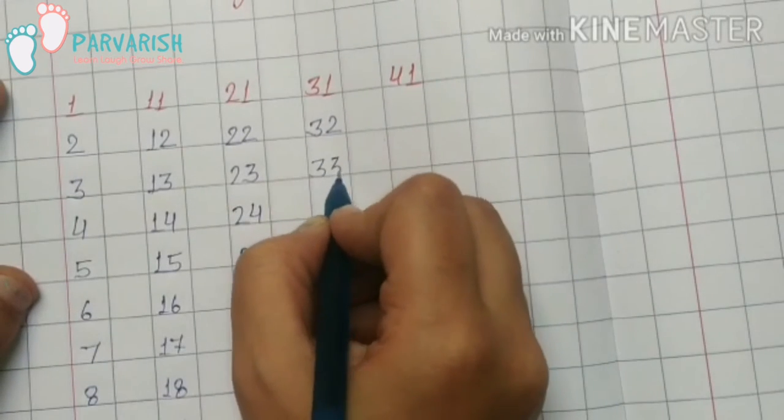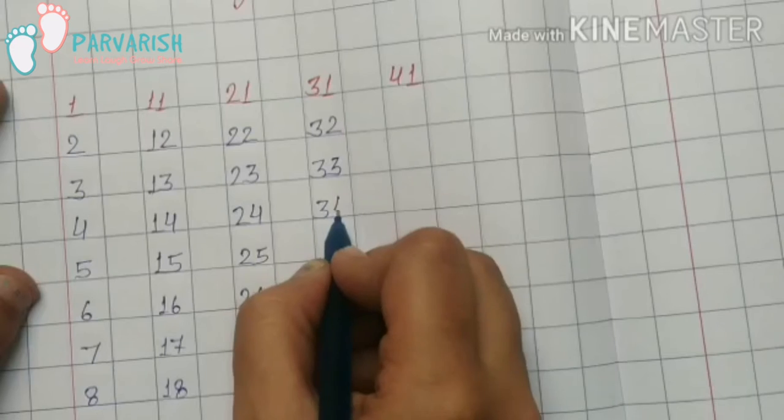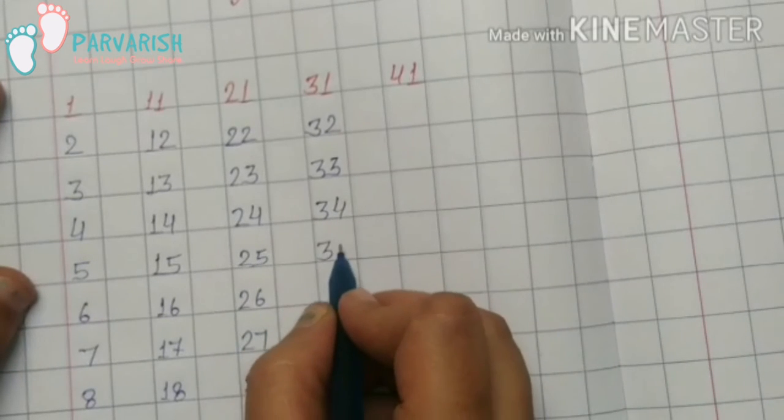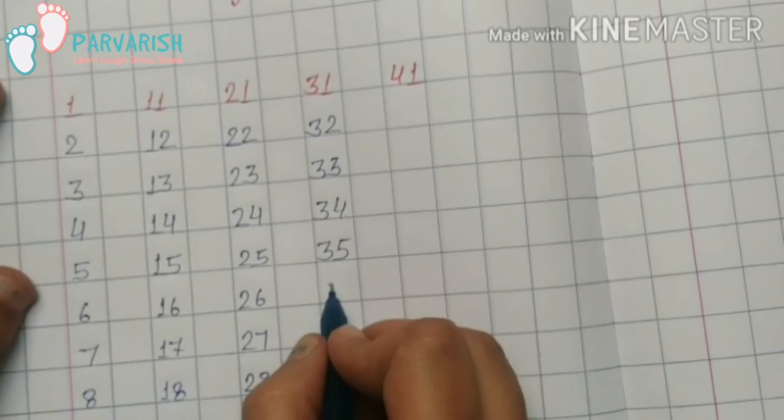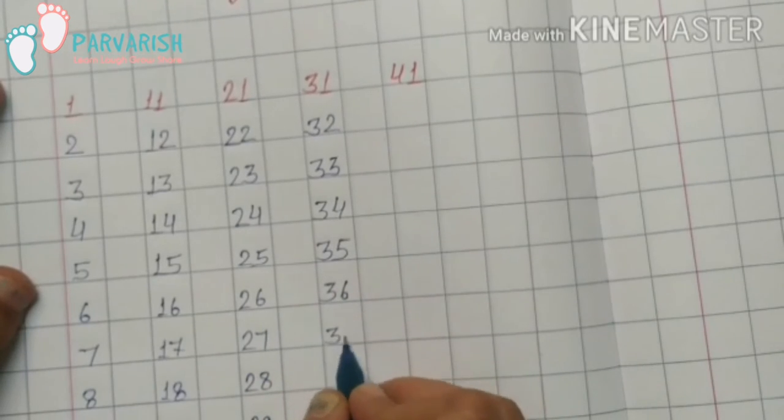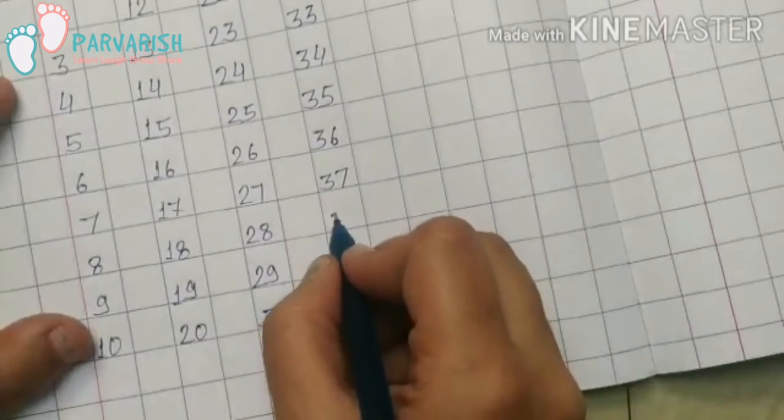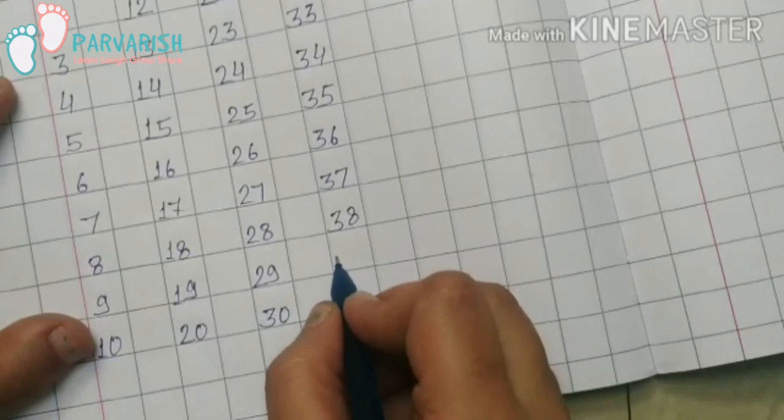3-1, 31; 3-2, 32; 3-3, 33; 3-4, 34; 3-5, 35; 3-6, 36; 3-7, 37; 3-8, 38.